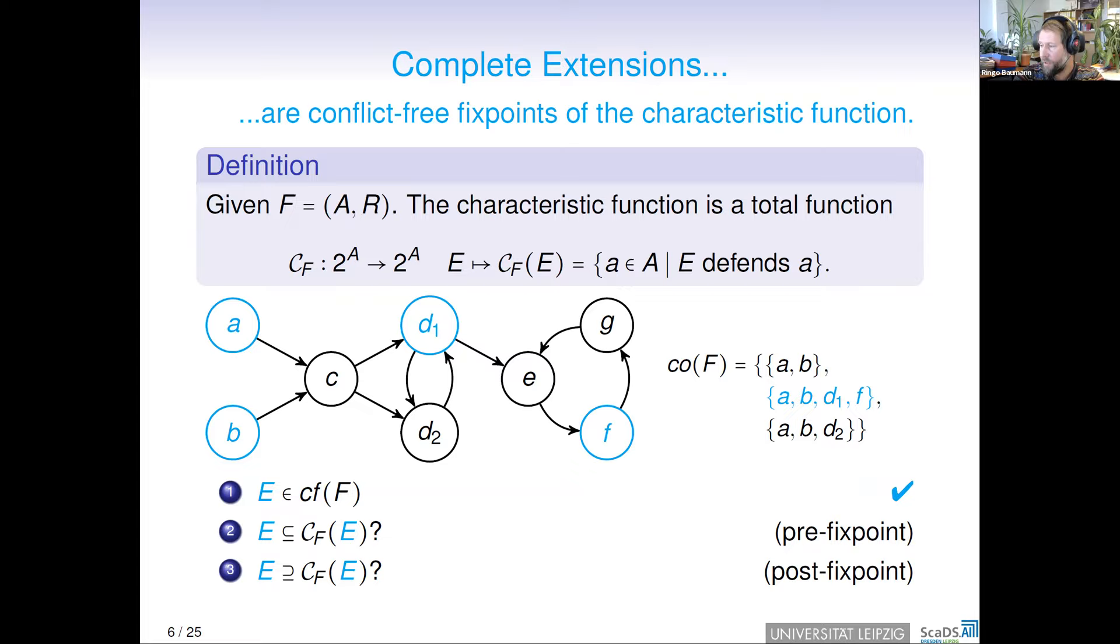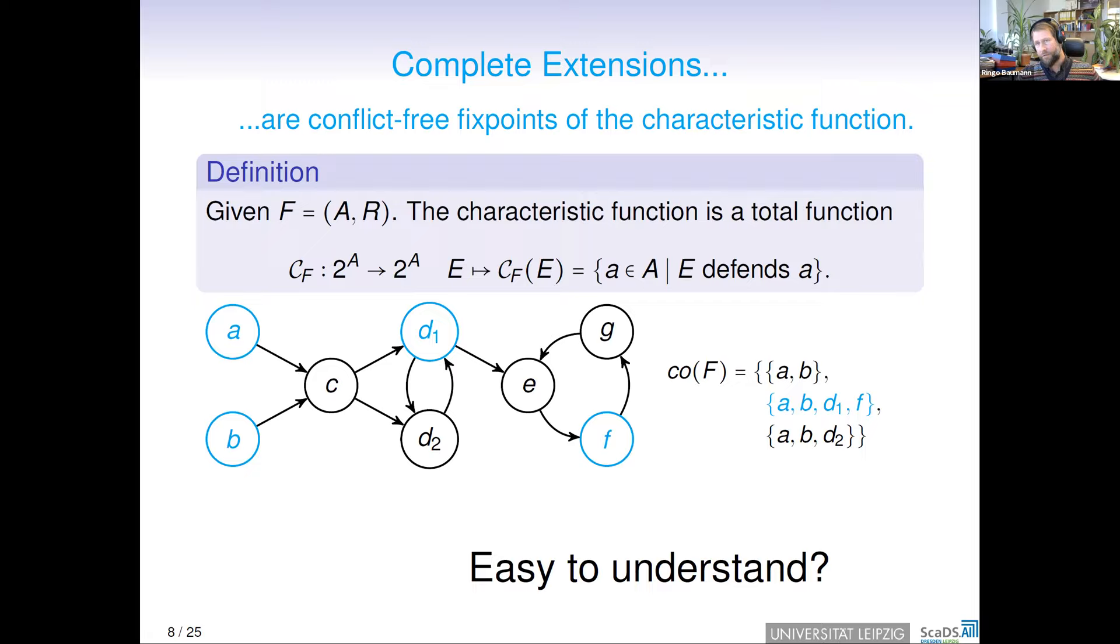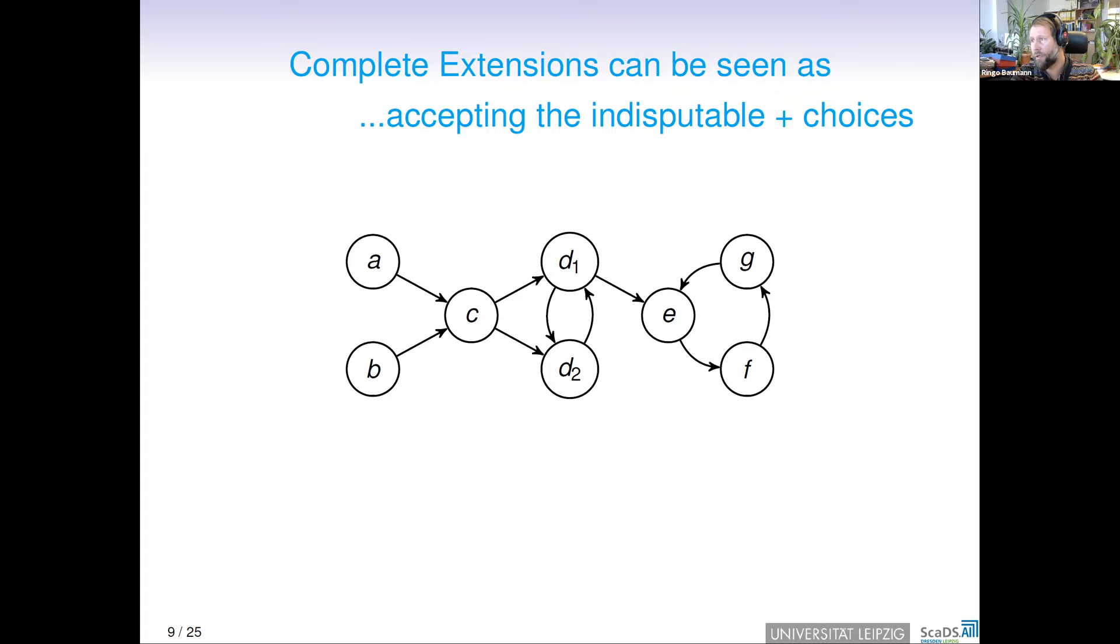Of course, the question is, is this easy to understand for non-experts, if somebody asks why F is acceptable, and you say because F is part of a conflict-free fixed point of the characteristic function? In this paper, we have shown that complete extensions can be understood as accepting the indisputable plus choices. By choices, we mean selecting arguments from even cycles. The inspiration to this work traces back to Dung and Bench-Capon, as well as Dvořák, because they have shown that different complete extensions are due to the existence of even cycles.